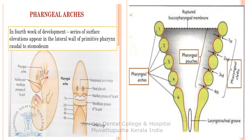There is a mesodermal thickening in the wall of the cranial-most part of the foregut. These mesodermal thickenings are called pharyngeal or branchial arches. The mesoderm is arranged in the form of six cylindrical bars, seen in coronal section of the pharyngeal arch. These bars grow ventrally in the floor of the developing pharynx, and the arches are numbered cranio-caudally 1, 2, through 6; the fifth arch disappears.